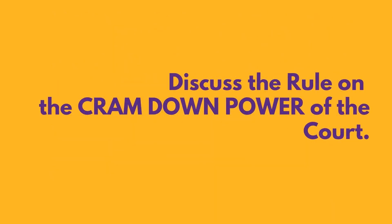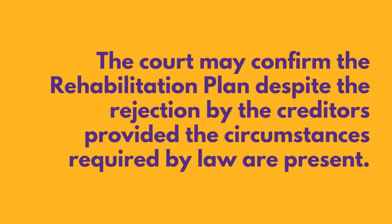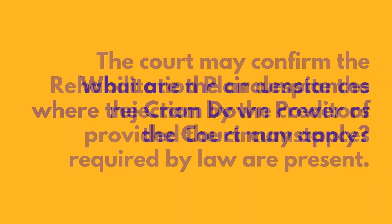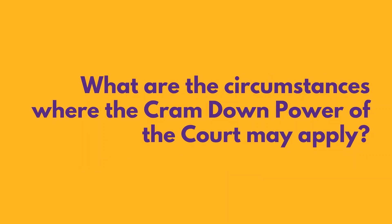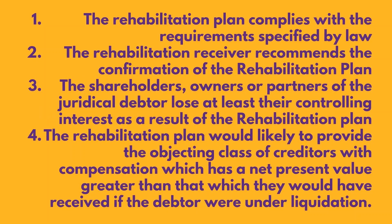Discuss the rule on the cram-down power of the court. The court may confirm the rehabilitation plan despite the rejection by the creditors provided the circumstances required by law are present. What are the circumstances where the cram-down power of the court may apply? First, the rehabilitation plan complies with the requirements specified by law. Second, the rehabilitation receiver recommends the confirmation of the rehabilitation plan. Third, the shareholders, owners, or partners of the juridical debtor lose at least their controlling interest as a result of the rehabilitation plan. Fourth, the rehabilitation plan would likely provide the objecting class of creditors with compensation which has a net present value greater than that which they would have received if the debtor were under liquidation.